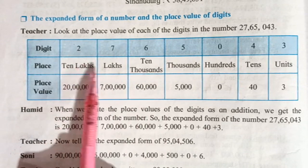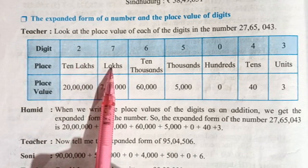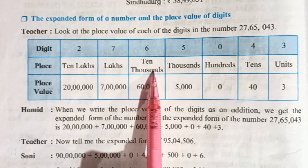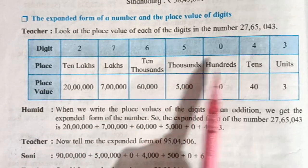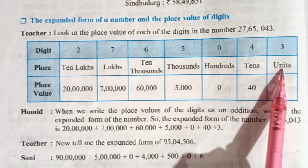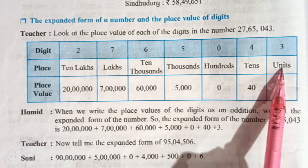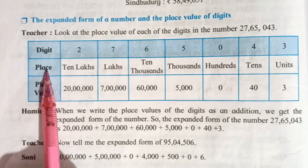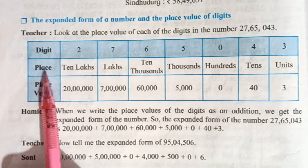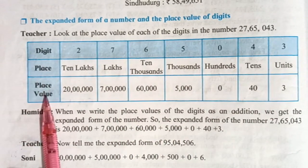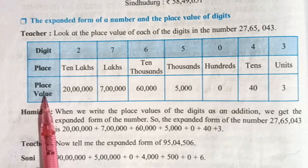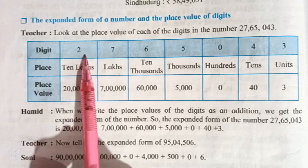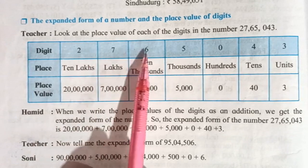Clear? Ten-lakhs and lakhs form the group of lakhs. Ten-thousands and thousands form the group of thousands. Hundreds, tens, and units form one group. This is what we call the place name. And the place value is what you are supposed to tell — the place value of each number.